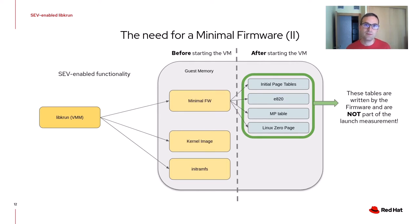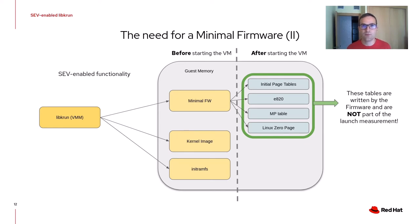Instead, we opted for a more traditional and conservative approach by implementing a minimal firmware. The SEV-enabled version of libkrun loads a minimal firmware alongside the kernel image and an initial ramdisk into guest memory before starting it. Those three components become part of the launch measurement. Since these components are shipped with the libkrun library, the remote attestation server just needs a copy of this library to obtain the correct digests and perform attestation. After the VM has started, the minimal firmware writes the data structures required to run the kernel, and those structures are no longer part of the launch measurement.